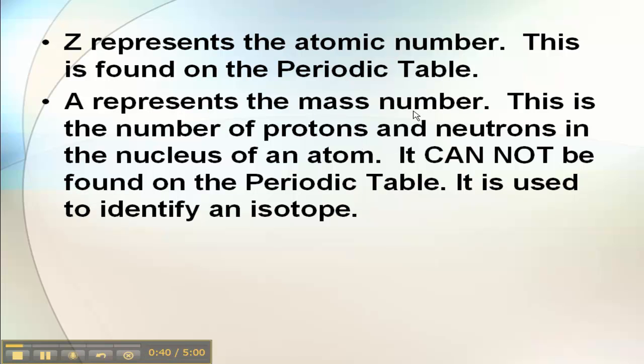Now A is the mass number. This is the number of protons and neutrons in the nucleus. It's a whole number. It cannot be found on the periodic table, and it's used to identify a specific isotope.